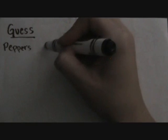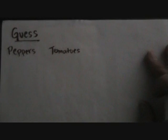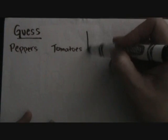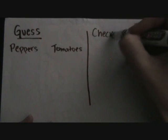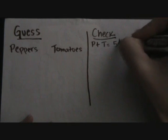Since I know that I am going to use the guess, check, and revise strategy, the first thing I need to do is make a table. At the top I will write 'Guess,' and underneath I will put what I will be guessing — each ingredient: peppers and tomatoes. After I guess each ingredient, the next step would be to check. I will know if my answer is correct if peppers plus tomatoes equals five and a half.